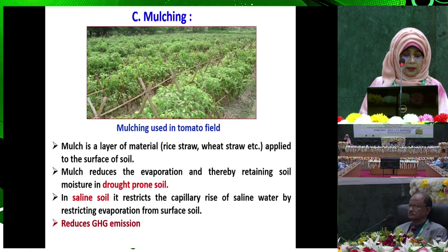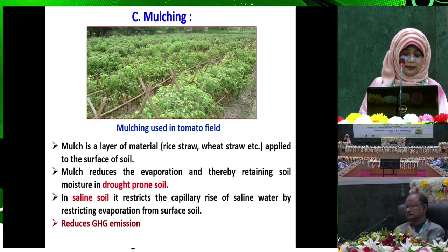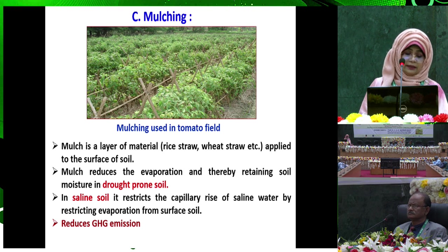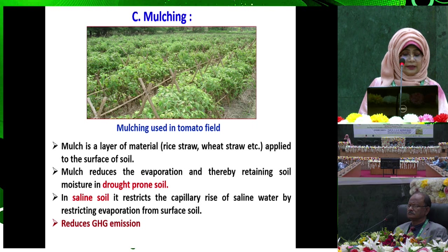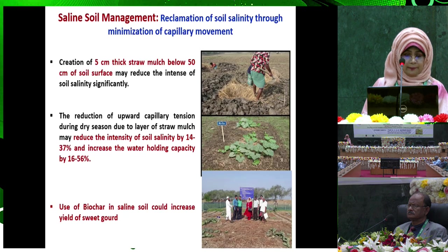Mulching is a layer of material such as rice straw or wheat straw applied to the surface of the soil. It reduces evaporation and thereby retains soil moisture in drought-prone soil. In saline soil, it restricts the capillary rise of saline water by restricting evaporation from the surface soil, hence reducing GHG emissions.